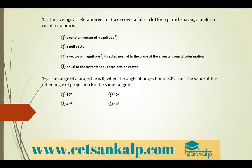Next problem: the average acceleration vector for a particle having uniform circular motion when time is taken for a full cycle. The average acceleration vector will be a null vector, because in one complete round the displacement vector is zero, which implies average velocity is zero, which implies average acceleration is also zero. So the answer is option 2.